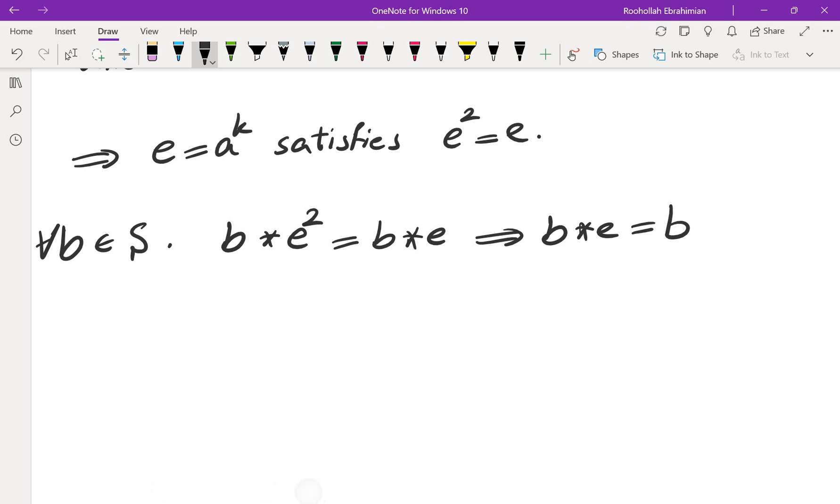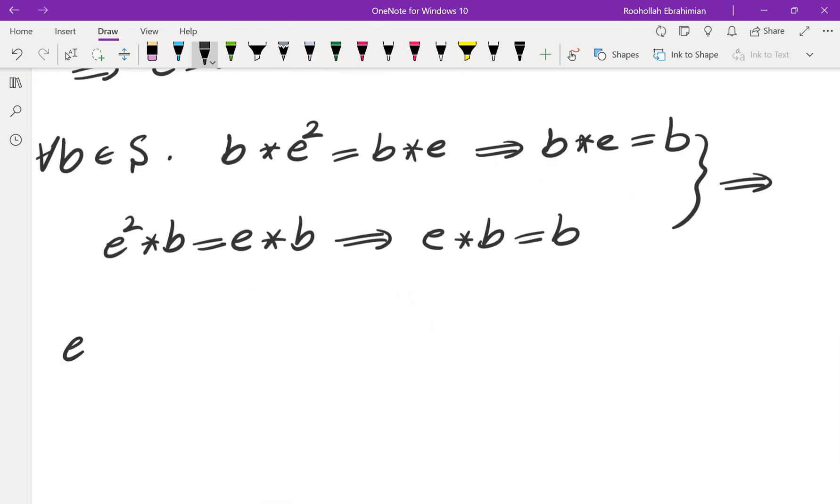Now, if you look at e squared star b, that is going to be e star b. Now, we can do cancellation from the left. That would give us e star b equals b. So because of this, and this happens for every b, this means e is the identity element. Okay, so this is the identity element in S. So we were able to successfully show that S, in fact, has an identity element.